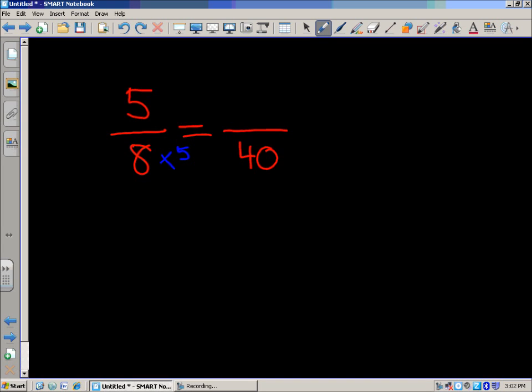What you do to the denominator, you have to do to the numerator. So we'll multiply that by five. Five times five equals twenty-five.